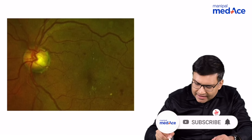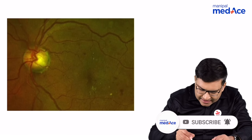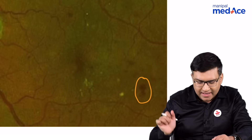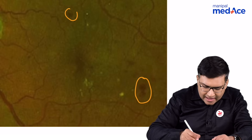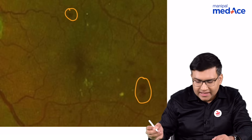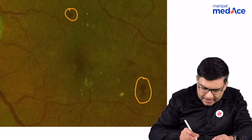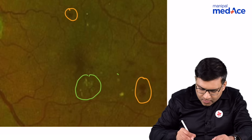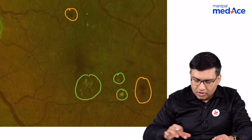In this picture you are seeing that there are some hemorrhages around the fundus, and also you can see these yellow spots which are the hard exudates.